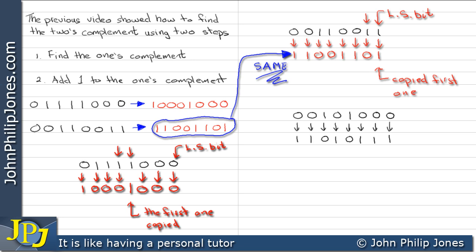Now I'm going to add 1 to this 1's complement. This is the addition of the 1. That's 0 down, carry 1. 0 down, carry 1. 0 down, carry 1. That's a 1. And all the others simply come down. That's the 2's complement. This process was covered in the last video.